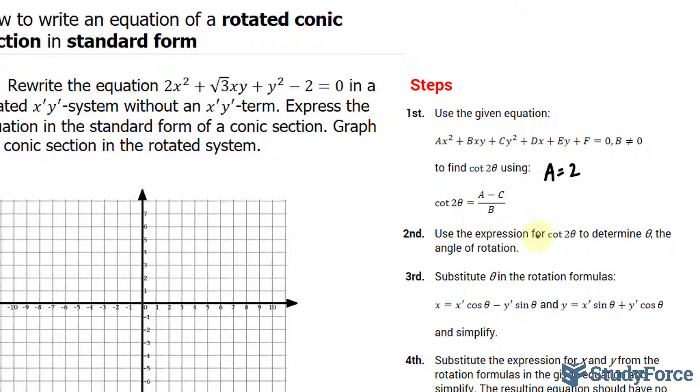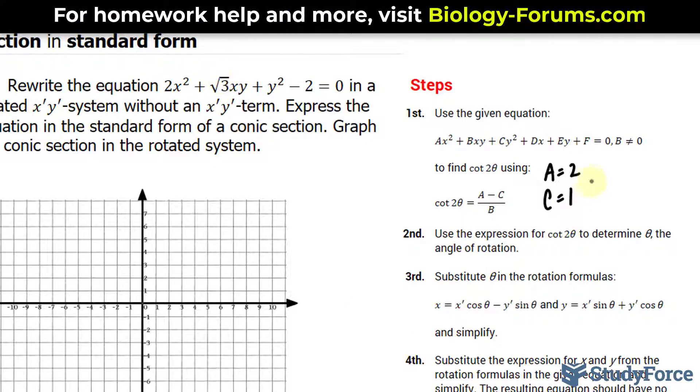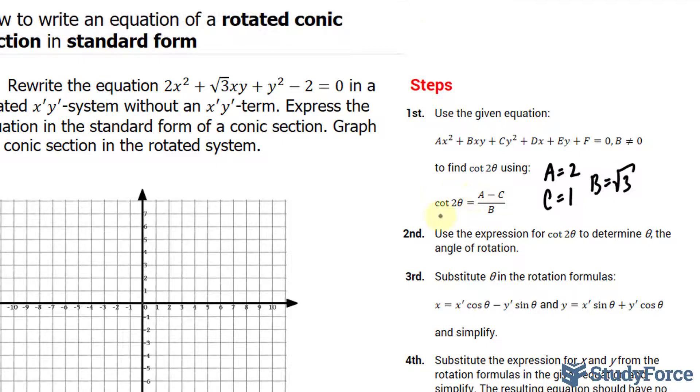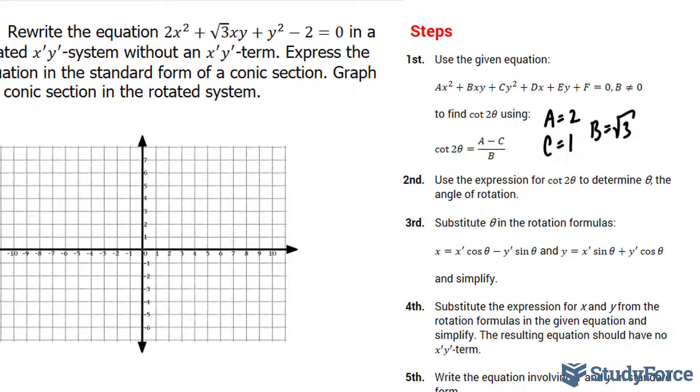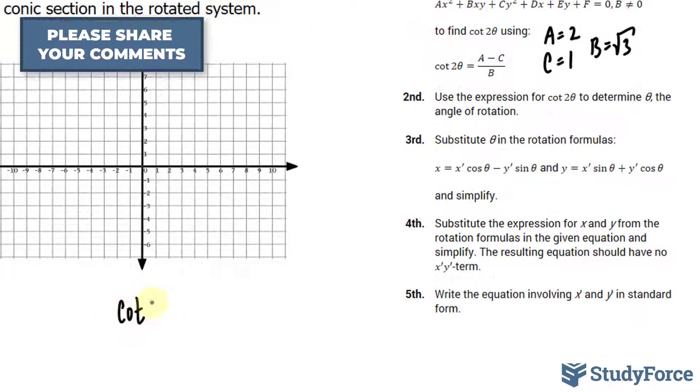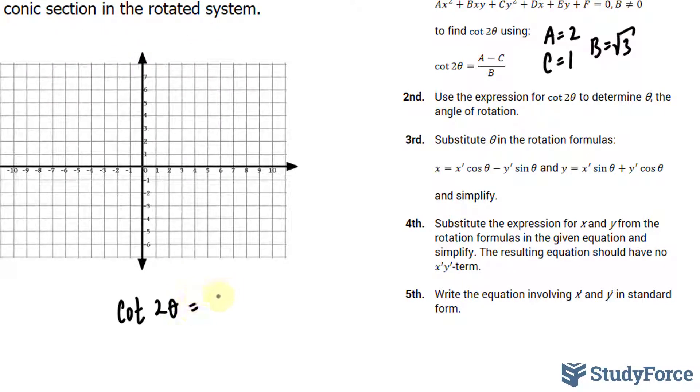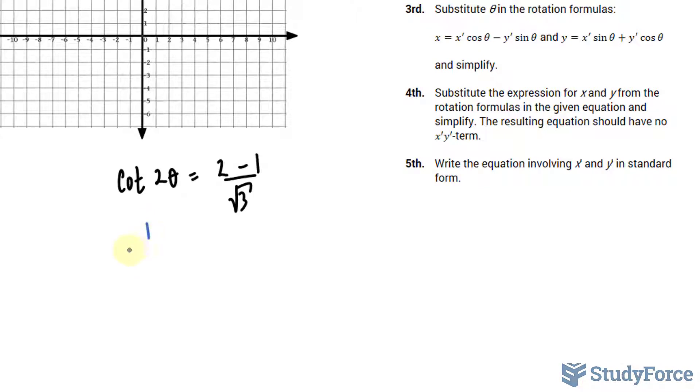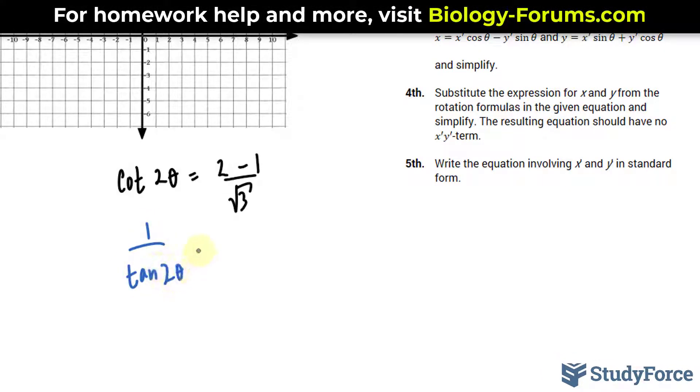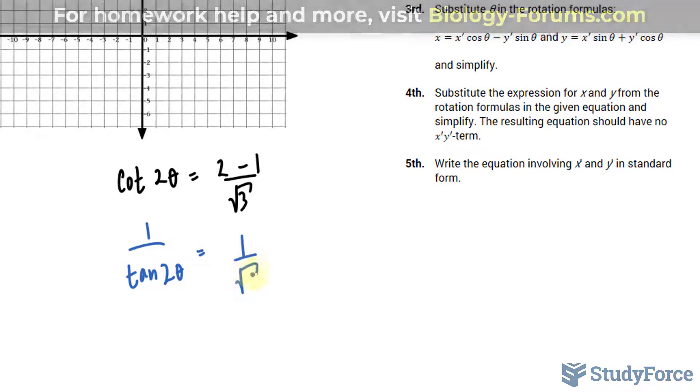So I'll write down a is equal to 2. c is the leading coefficient of y squared. In our case, that's 1. And b represents the leading coefficient of xy. And over here, we have the square root of 3. So let's go ahead and substitute those into the formula. We have cotangent, which is a reciprocal trigonometric function. That's 1 over tangent. And that's equal to 2 minus 1 over the square root of 3.